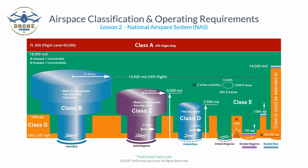Class B airspace generally runs from the surface of the airport up to 10,000 feet mean sea level and surrounds some of the busiest airports such as Chicago O'Hare, Los Angeles, and Dallas-Fort Worth. Class B airspace is controlled airspace, individually configured based on an area's natural terrain and man-made objects, and consists of a surface area with two or more layers resembling an upside-down wedding cake.